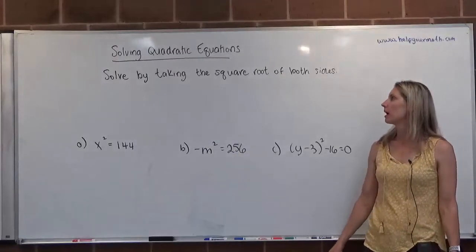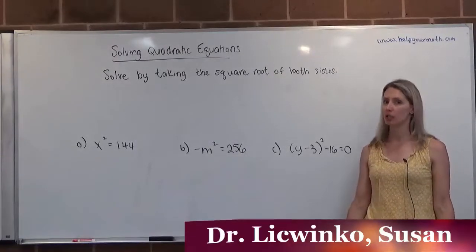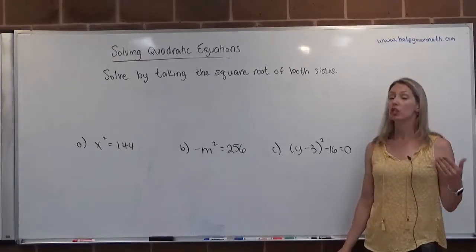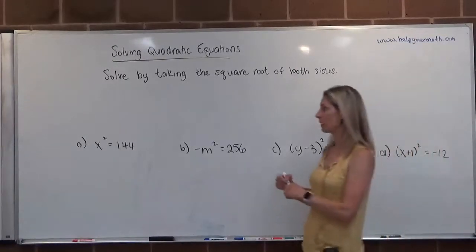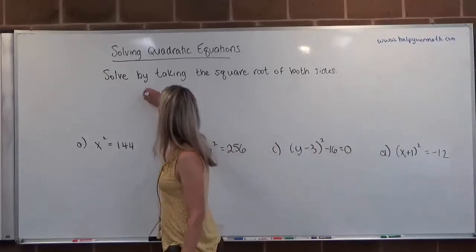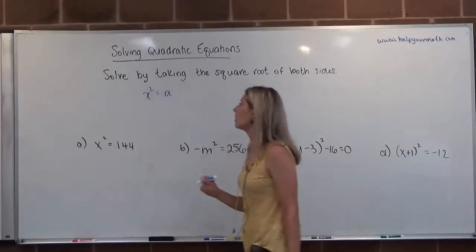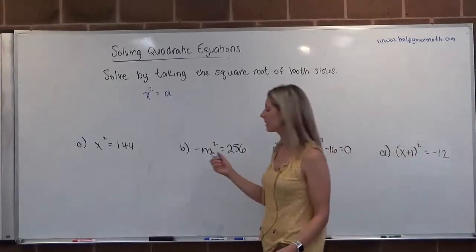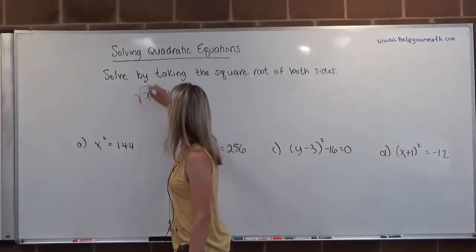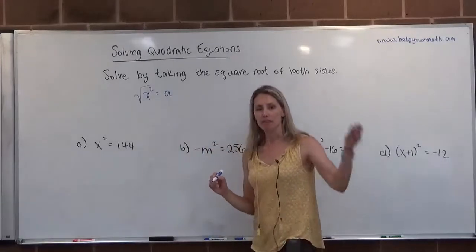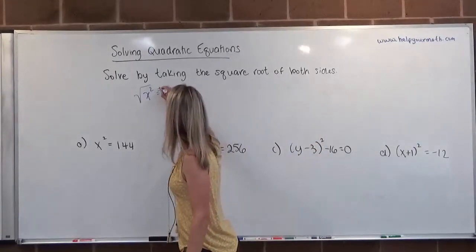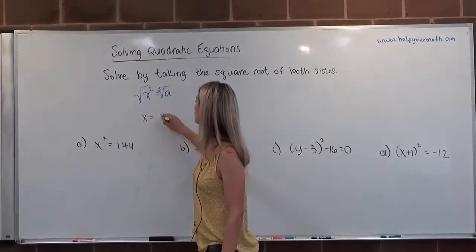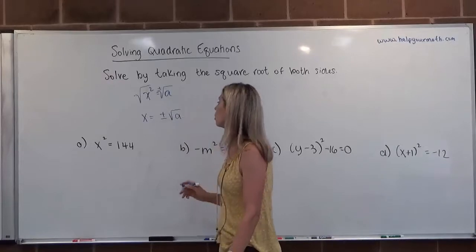In this video, we're going to look at solving quadratic equations by taking the square root of both sides. When we have something like x squared equals some number and we want to get x by itself, we take the square root. But when we take the square root of the non-variable side, you must add a plus or minus sign in front of it. So this becomes plus or minus the square root of a, and x equals positive or negative root a.